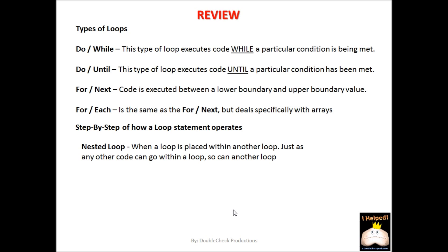To review, we have our different types of loops. The do-while loop executes code while a particular condition is being met. The do-until loop executes code until a particular condition has been met. The for-next loop executes code between a lower and upper boundary — you set the boundaries and it steps through, running the code within. The for-each loop is similar to the for-next but deals specifically with arrays. Finally, nested loops are simply a loop within another loop.